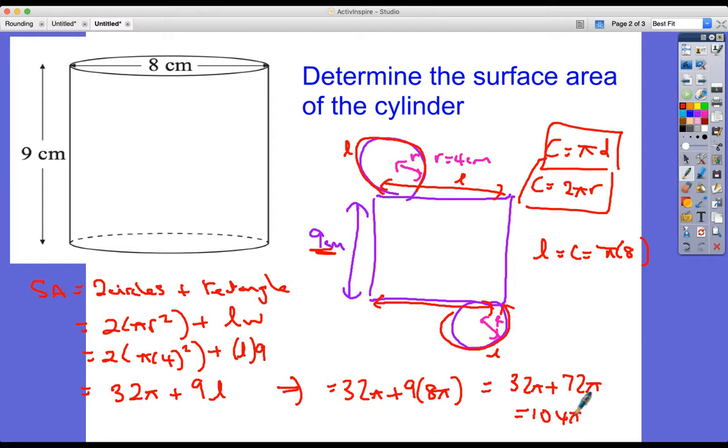And if we put that into our calculator and work it out to three significant figures, we get 327 to three significant figures. And what is it? It's area, so it'd be centimeters squared.